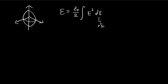We're going to use spherical coordinates, so the volume element is r squared sine theta dr d-theta d-phi. We're going to integrate across all space, not just the sphere — from zero all the way to infinity.